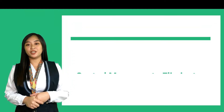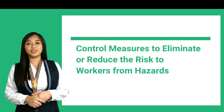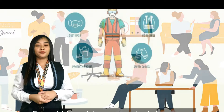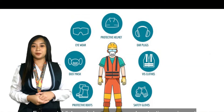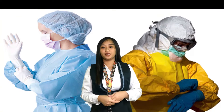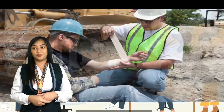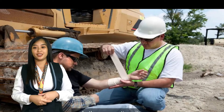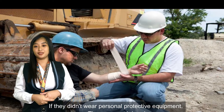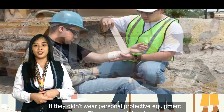Second is control measures to eliminate or reduce the risk to workers from hazards. Every establishment has personal protective equipment. We all know what it is used for — it is for us, or the workers, to be safe. For example, in a construction site, if they didn't wear the personal protective equipment, they may get injured.